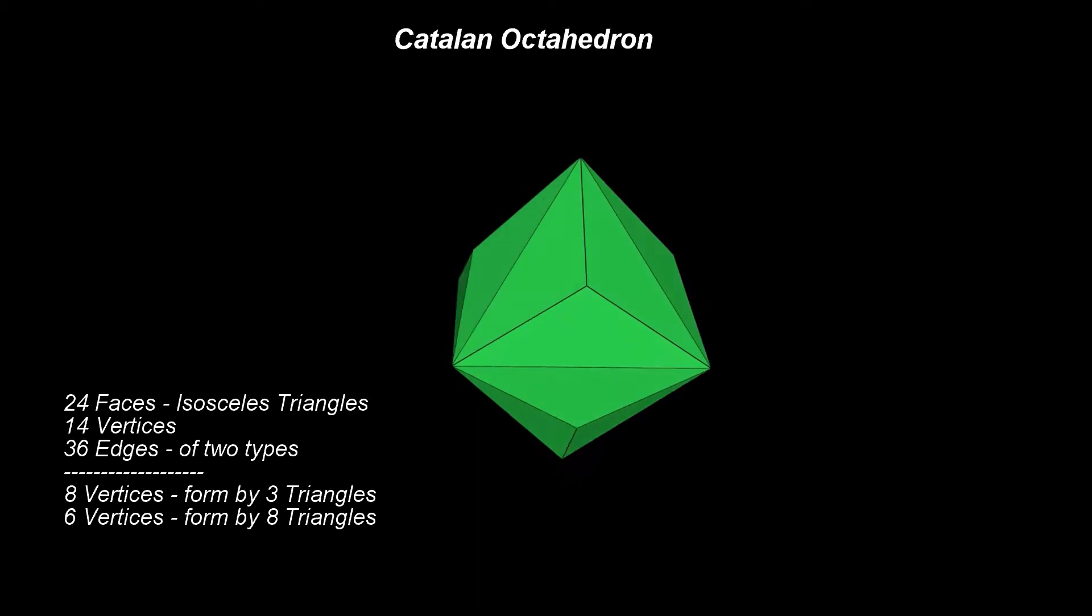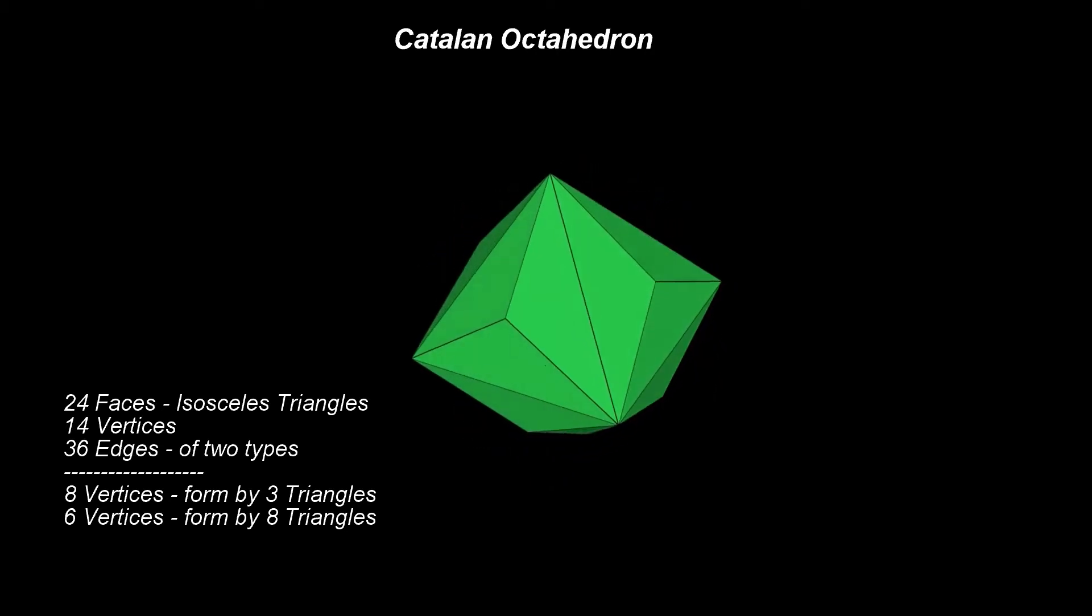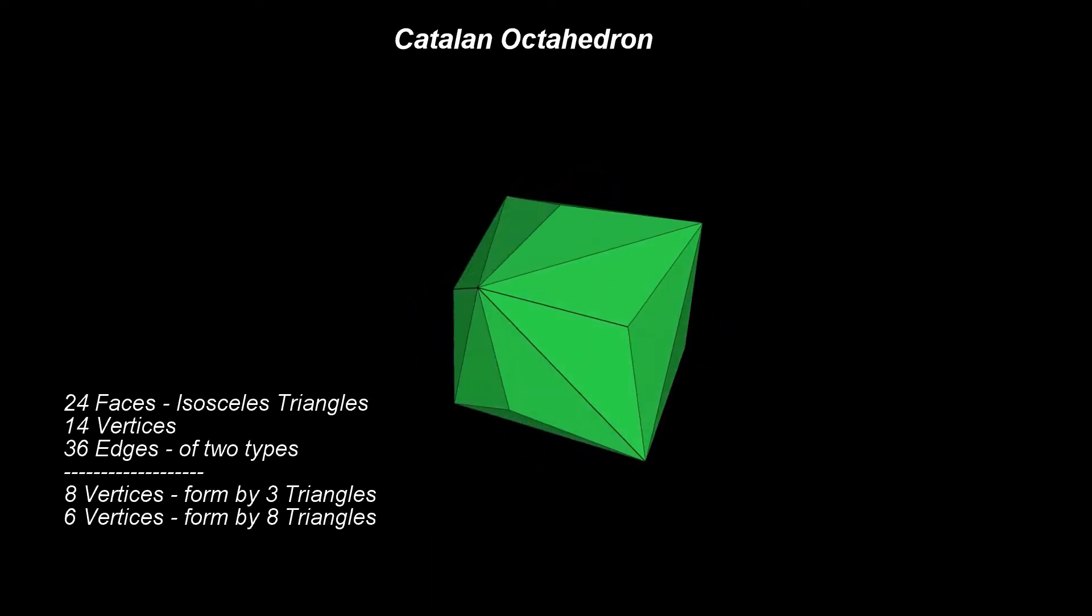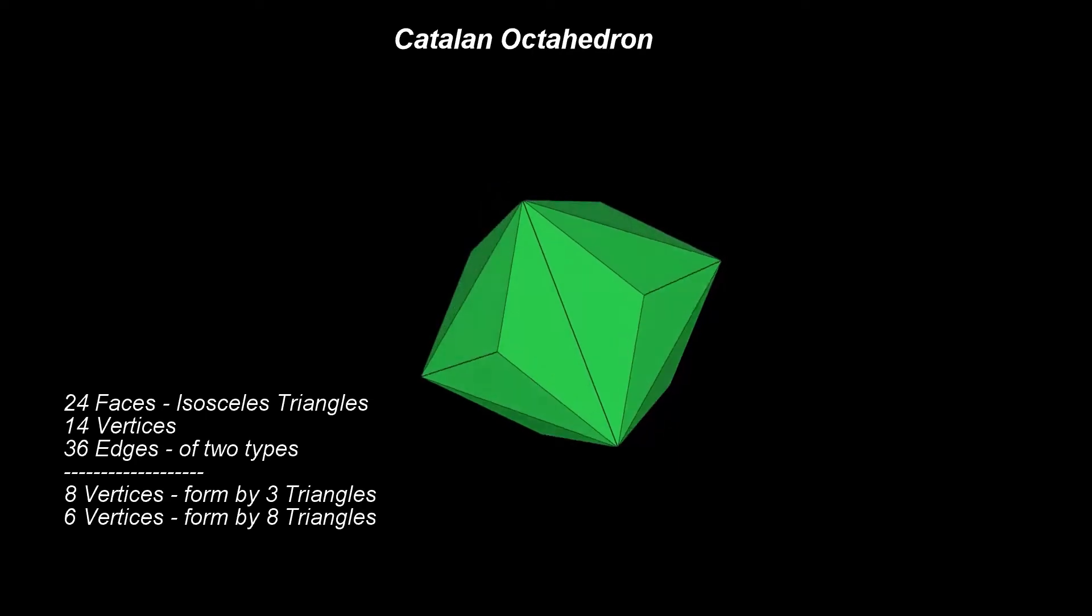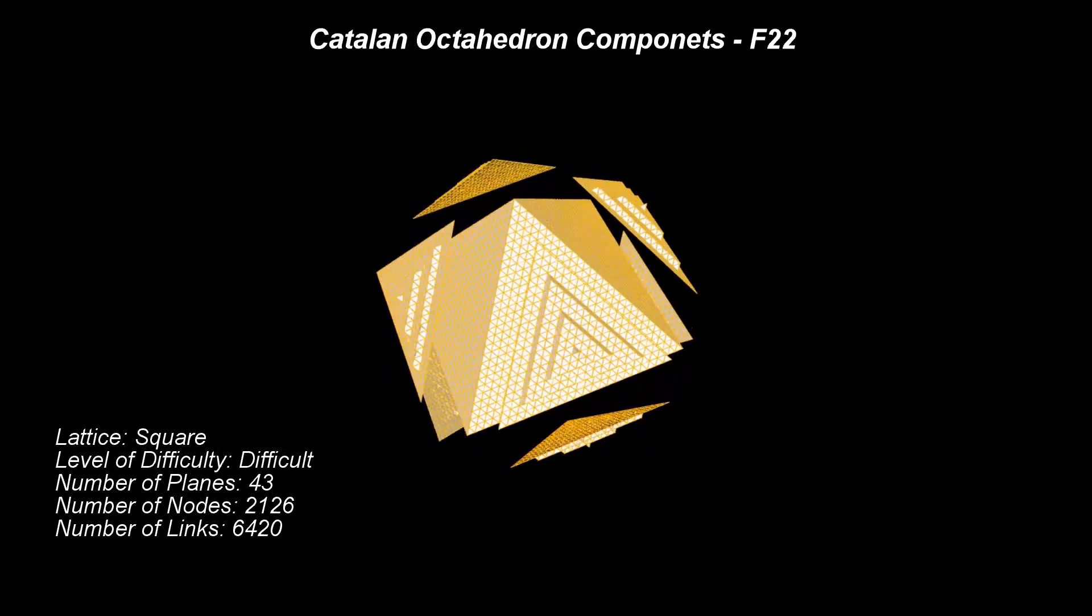We have already seen a Catalan solid, namely the Catalan tetrahedron, while presenting minimum surfaces related solids in CPS. See video 16 in this series. Now, let's look closer to the Catalan octahedron in CPS.